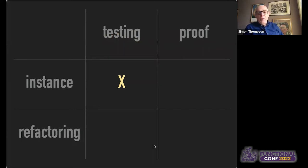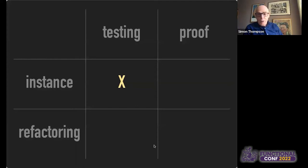When we talk about assurance, there are two things potentially going on. One is testing — we can use testing, or we can scale that up and use some sort of automation, logic technology, proof, and other automated logic approaches. And also we can think of two things: testing an instance of a refactoring, and testing the refactoring itself. What I mean by an instance is, for example, in this project we've renamed this function from foo to bar, and we want to check in this project that the refactoring has been successful. We're checking a particular refactoring in a particular project — that's the situation we see at the moment.